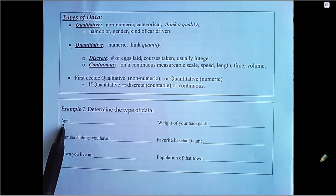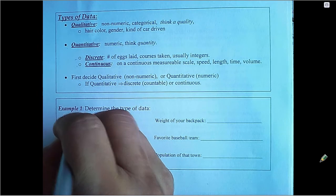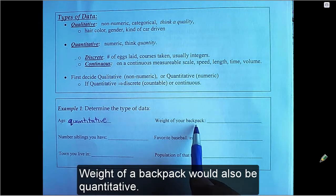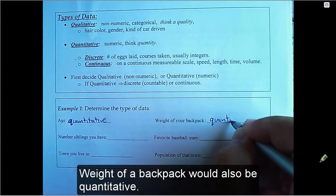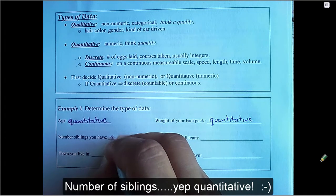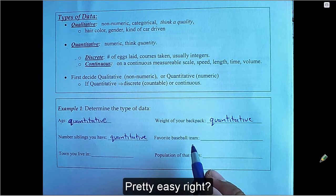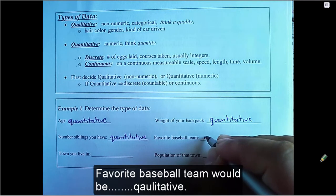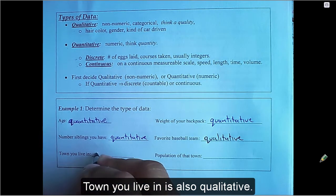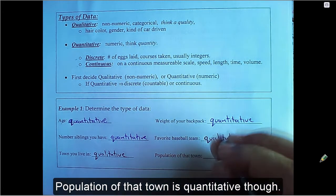An example. Age is quantitative. Weight of a backpack would also be quantitative. Number of siblings. Yep, quantitative. Pretty easy, right? Favorite baseball team would be qualitative. The town you live in is also qualitative. Population of that town is quantitative, though.